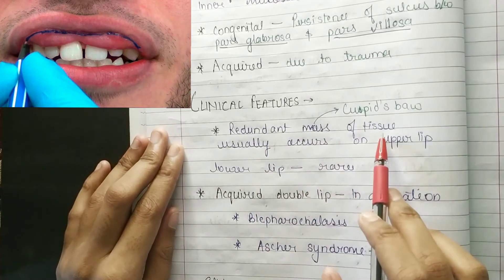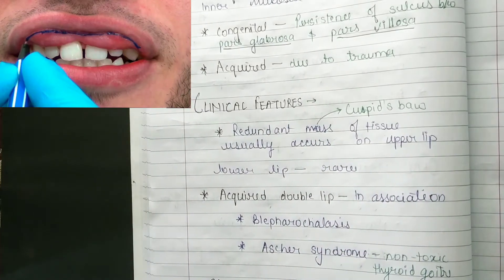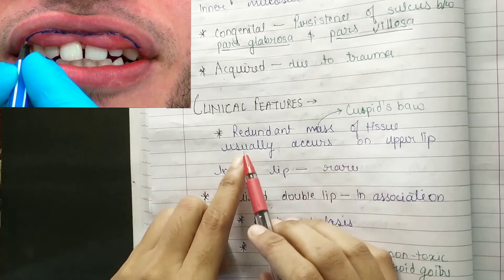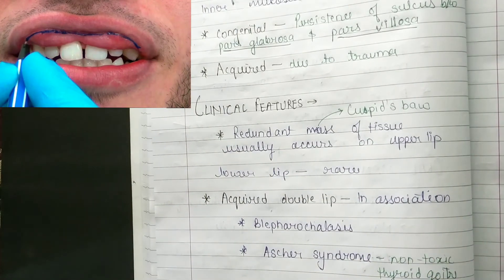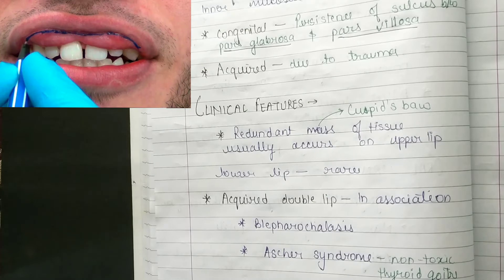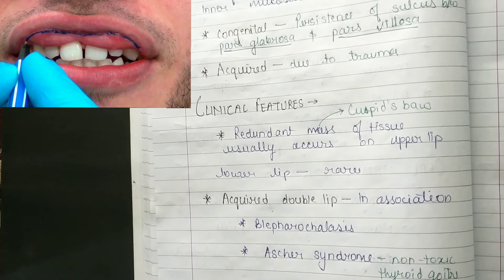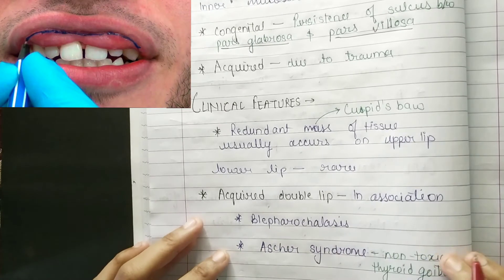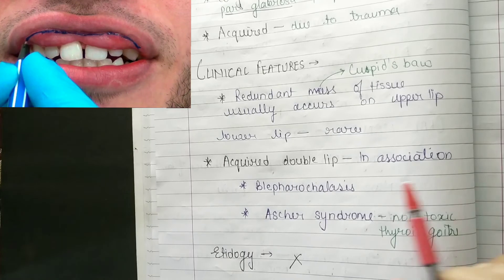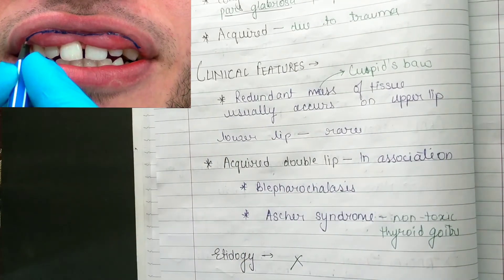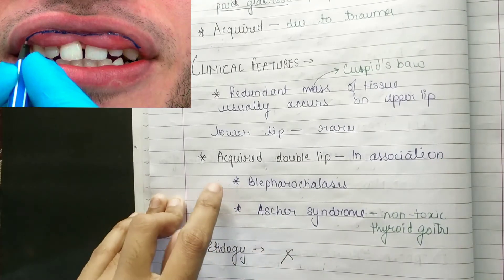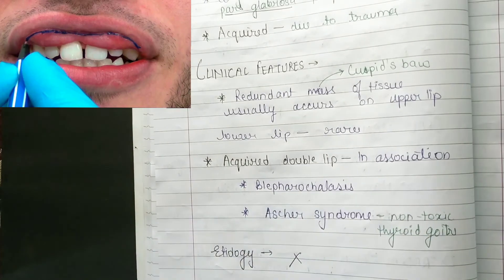If we talk about clinical features: there is a redundant mass of tissue, also called Cupid's bow. This clinical feature usually occurs at the upper lip. The lower lip is very rare compared to the upper lip. Acquired double lip is associated with blepharochalasis and Ascher syndrome. Ascher syndrome involves non-toxic thyroid goiter, and its etiology is not fully known.